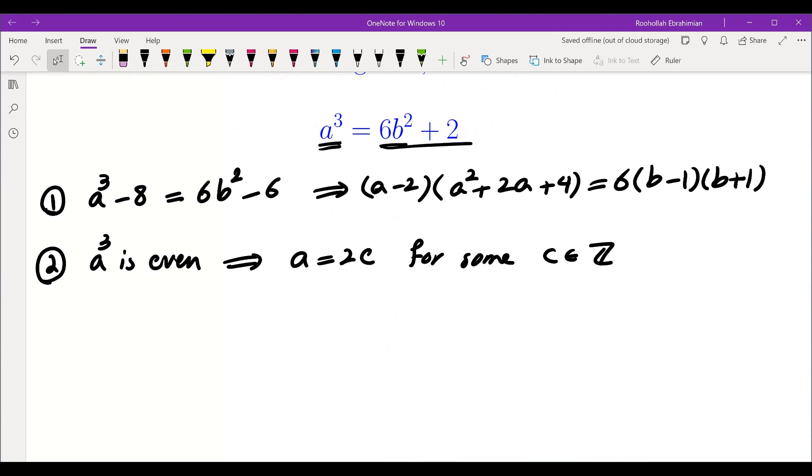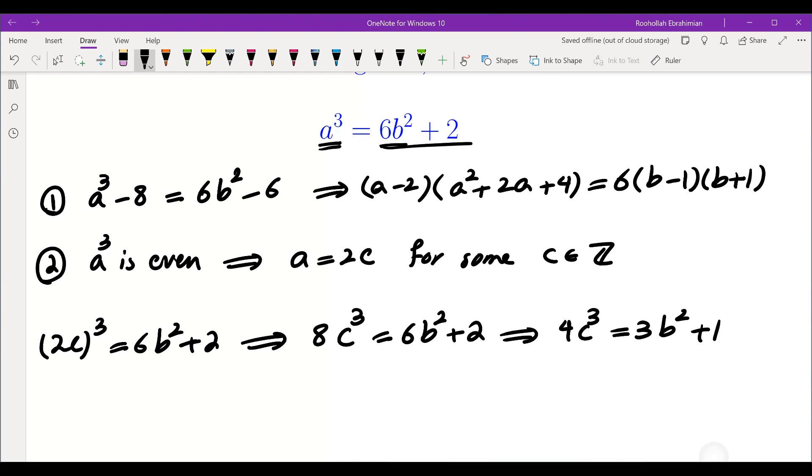Then I took that and plugged it back into the equation. So that gives me 2c cubed is equal to 6b squared plus 2. So cubing that, we get 8c cubed is equal to 6b squared plus 2. That gives me 4c cubed equals 3b squared plus 1.